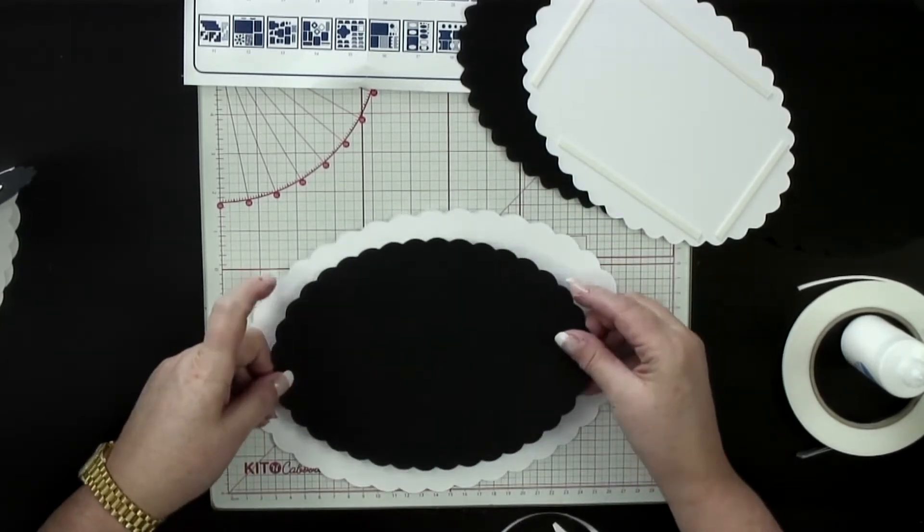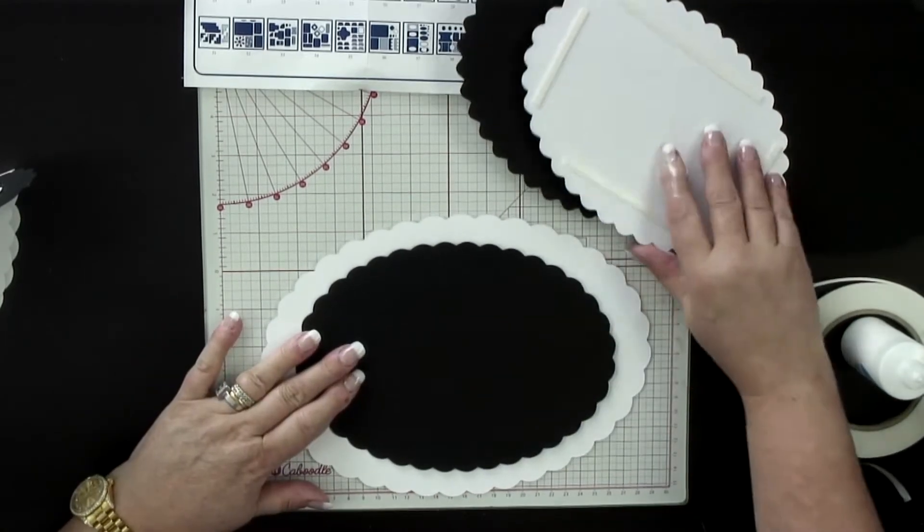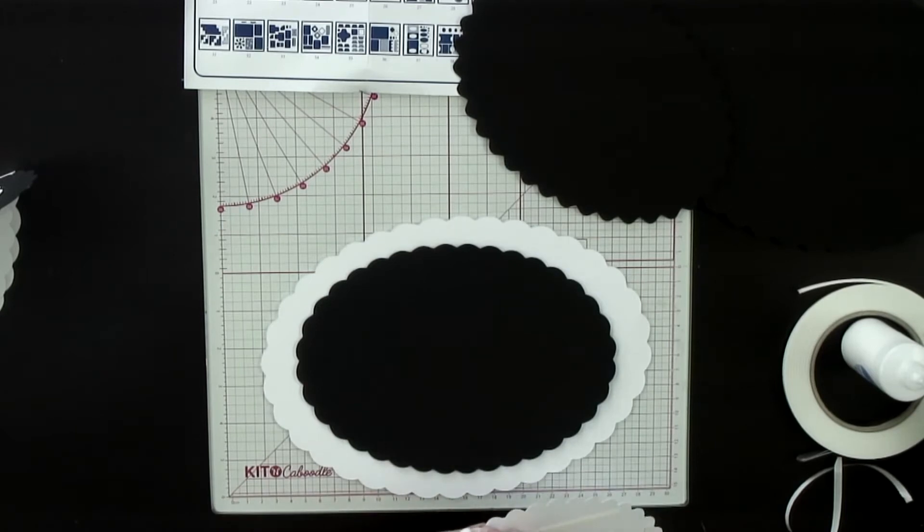And the other thing about having mats and layers like this is that it also gives us a little bit of a shadow. So it adds dimension.